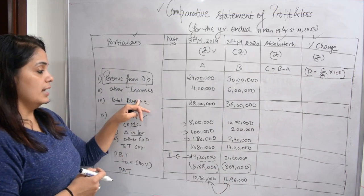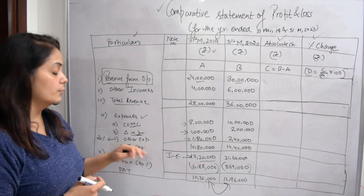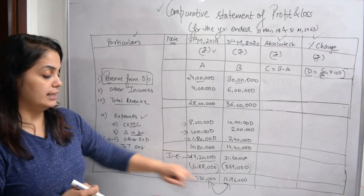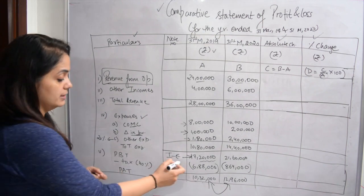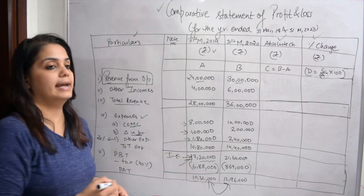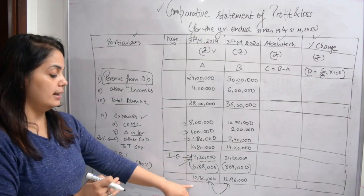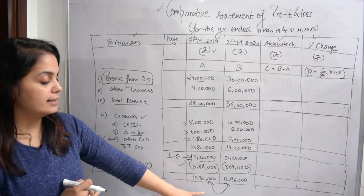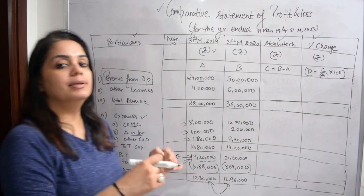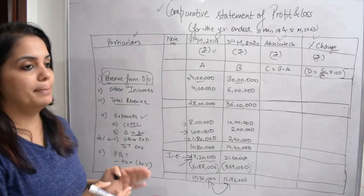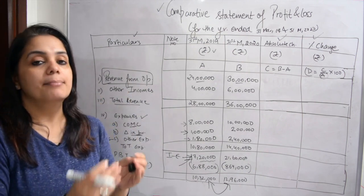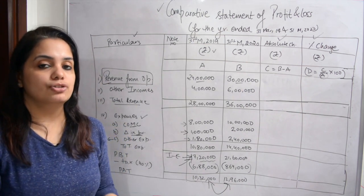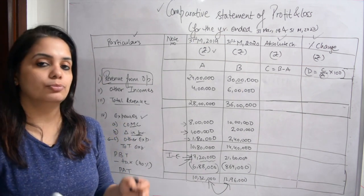Now I will subtract total expenses from total revenue. My previous year profit before tax is 17 lakhs 20,000. Applying 40% tax, that is 6 lakhs 88,000, and subtracting that gives me profit after tax (PAT) for 2019 and 2020. So the format is: total income minus expenses gives profit before tax, then minus tax gives profit after tax.